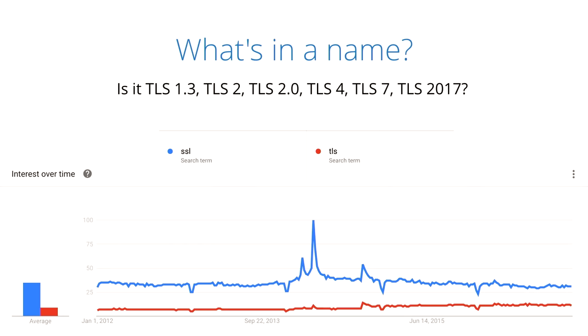Other changes in TLS 1.3 involve naming. TLS 1.0, 1.1, 1.2 were fairly small iterations even on SSL v3, whereas TLS 1.3 is quite a big change. There's been discussion about the name — should it be called 1.3? The audience is asked for a show of hands on various name options: TLS 1.3, TLS 2, TLS 4, TLS 2017, TLS 7, TLS Millennium 2019 X, TLS Vista.